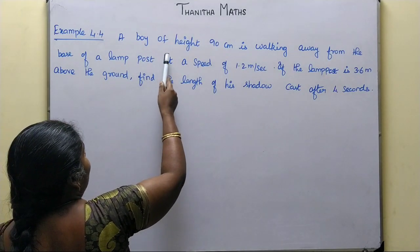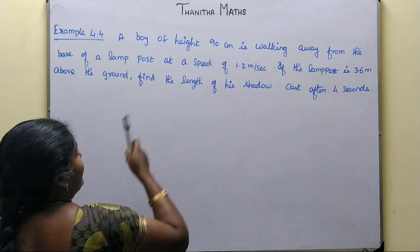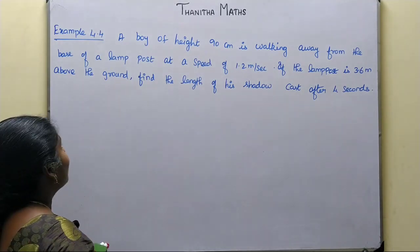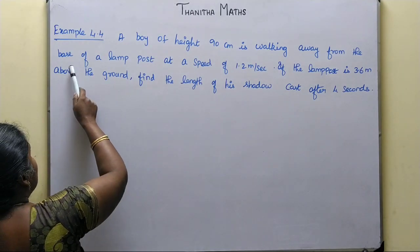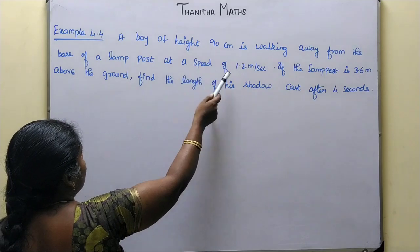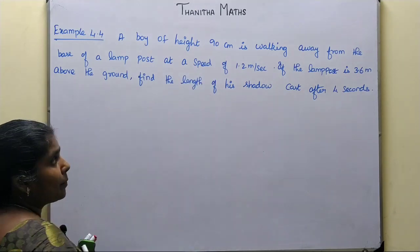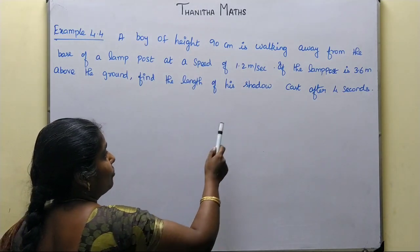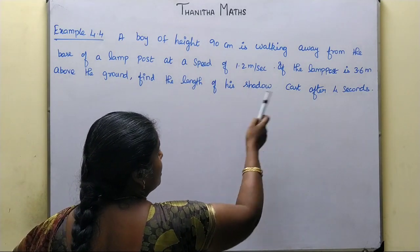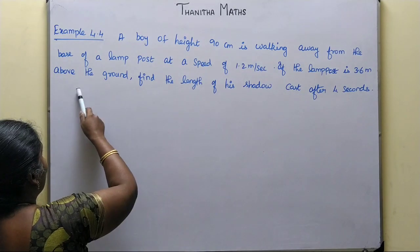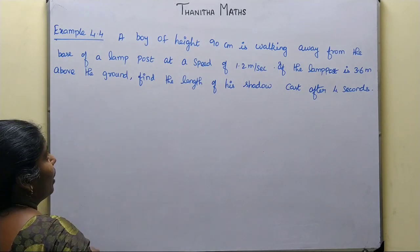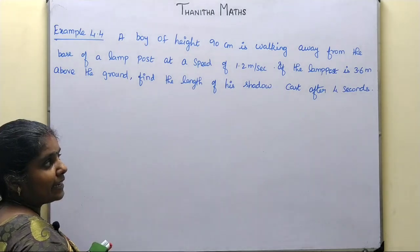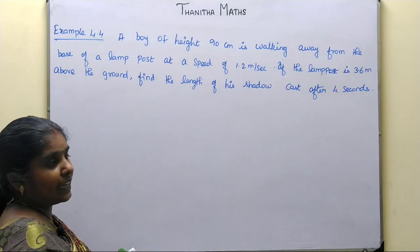A boy of height 90 cm is walking away from the base of a lamp post at a speed of 1.2 meters per second. If the lamp post is 3.6 meters above the ground, find the length of his shadow cast after 4 seconds.